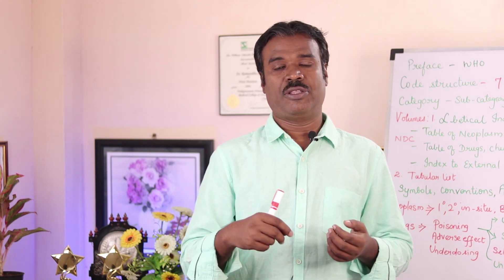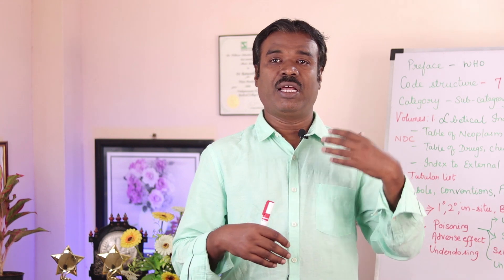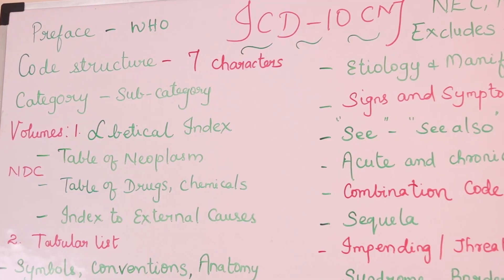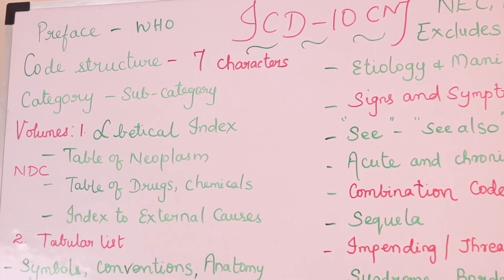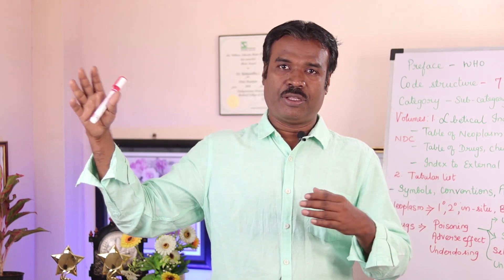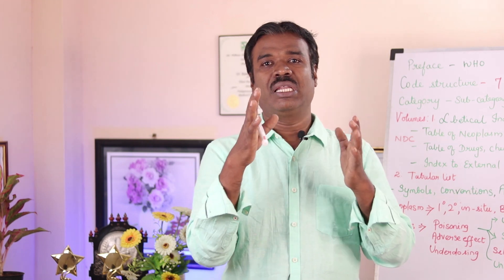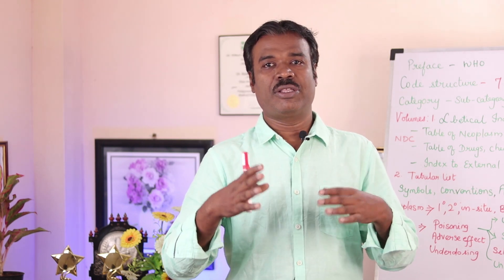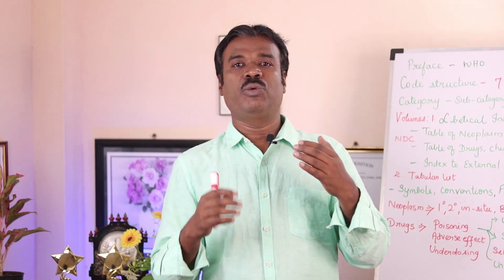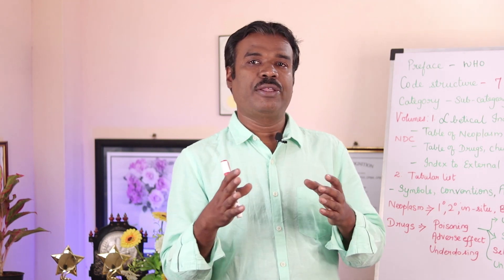Next, we will see the code structure. You can have a maximum of seven characters. With ICD-9, we mostly had numerical characters, whereas with ICD-10 we now have alphanumeric characters. These characters can vary up to seven — positions one through seven. To understand this, I am giving one example.